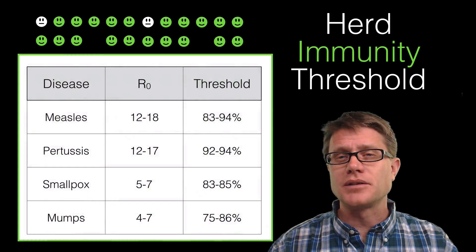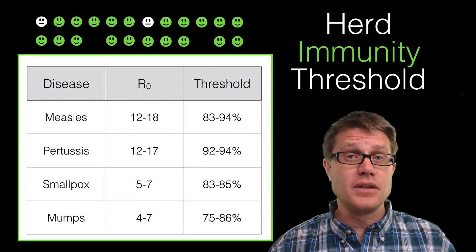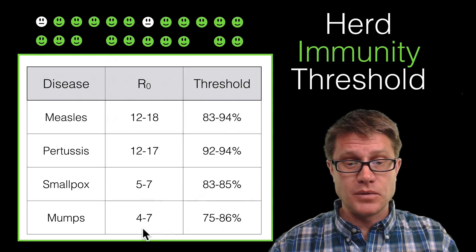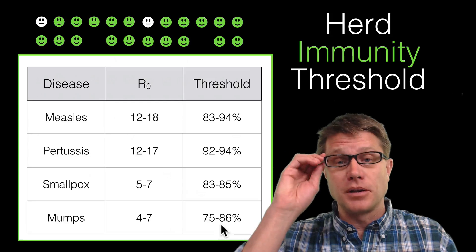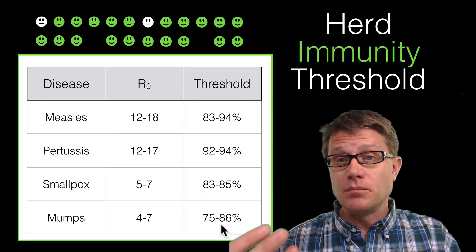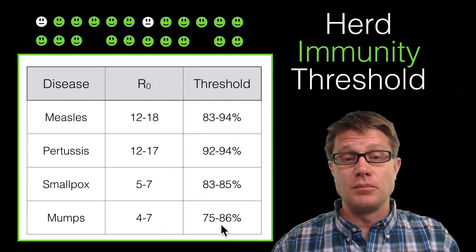Well it's going to depend on the R0 value of the disease. So if it's something like mumps with an R0 value of 4 to 7 we have to have at least 75 to 86 percent of the population who is immune, so the whole herd can gain immunity.